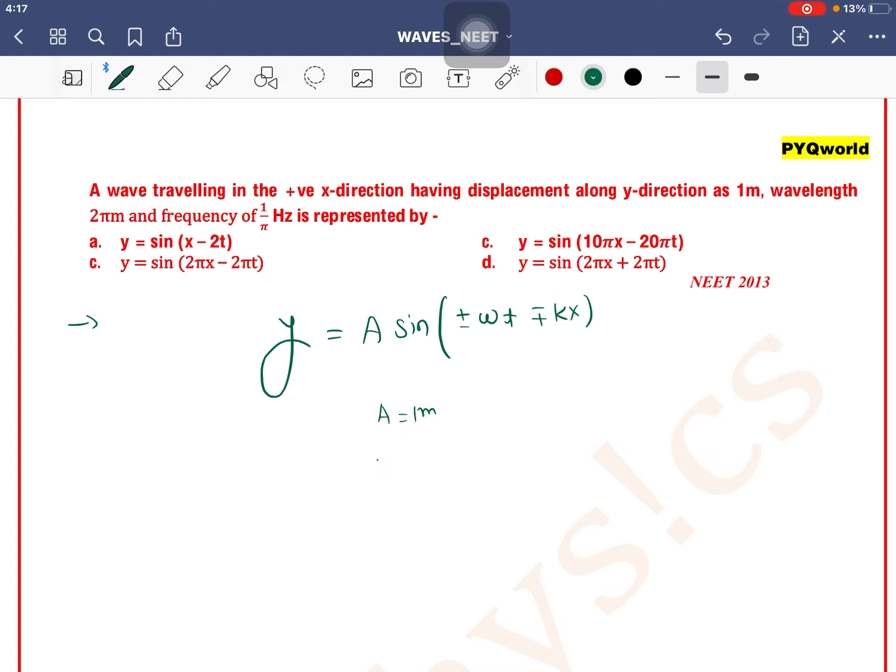Amplitude is 1 meter, wavelength is 2π meter, so we have to get k. k value is 2π/λ, so λ is 2π, so k value is 1. ω is 2πf.